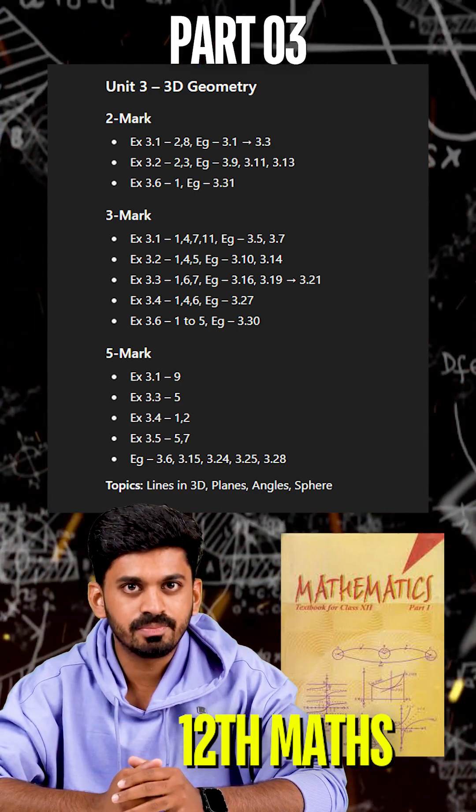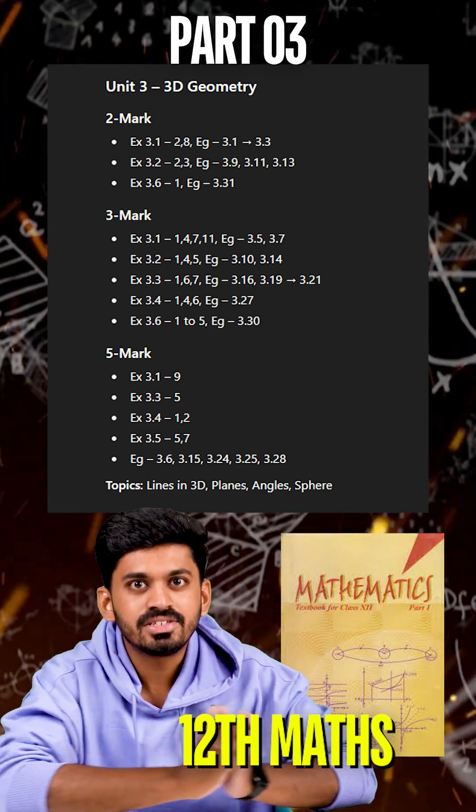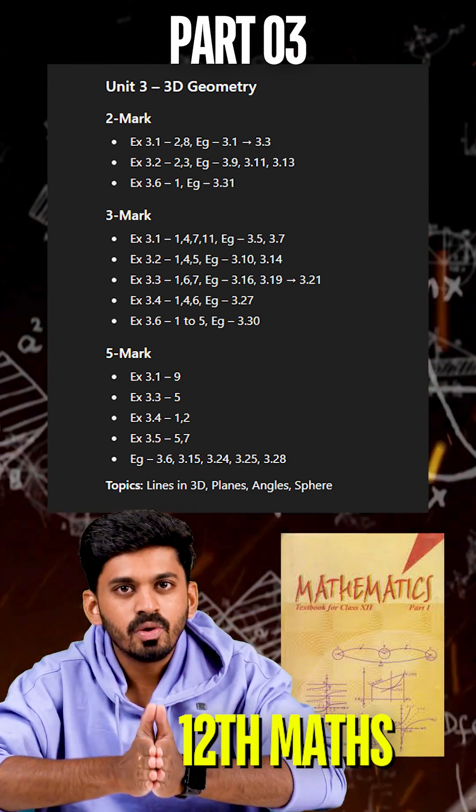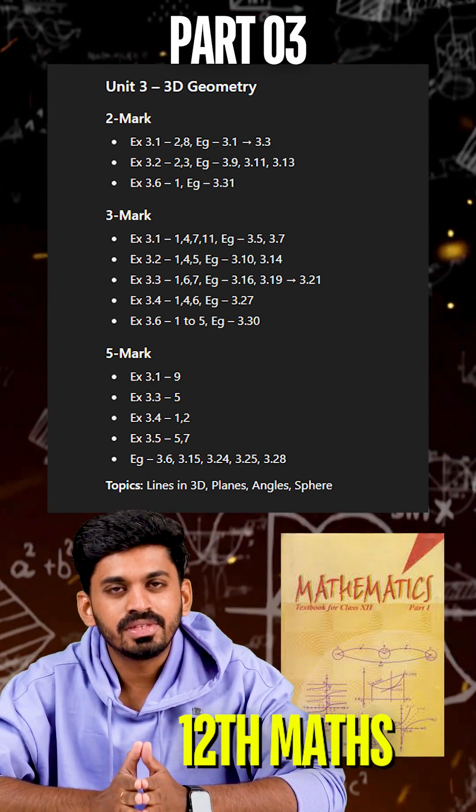Examples 3.19, 3.20, 3.21. XI is 3.4 law, 1, 4, 6. Example 3.27.